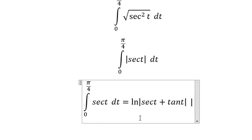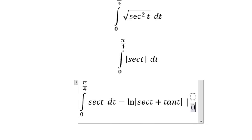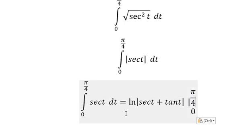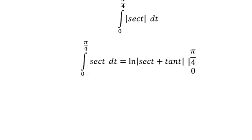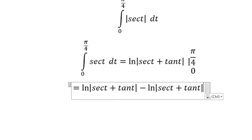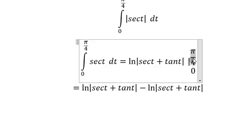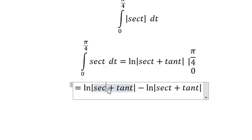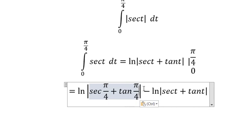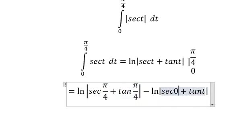We apply the bounds from 0 to π/4. Now we have the final answer. Substituting π/4: sec(π/4) equals √2 and tan(π/4) equals 1.